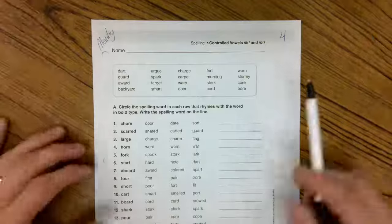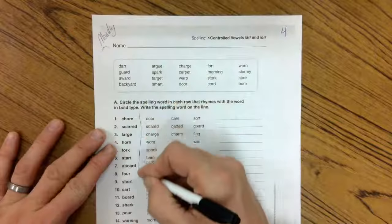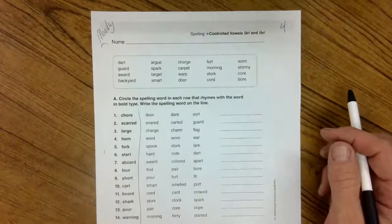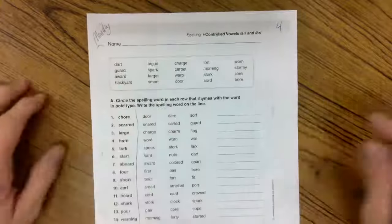Now your assignment today, you're going to take the first row, the bold ones, and you're going to rhyme it with a spelling word over it. Remember, it's got to be a spelling word. Some of the ones that they list here are not spelling words.